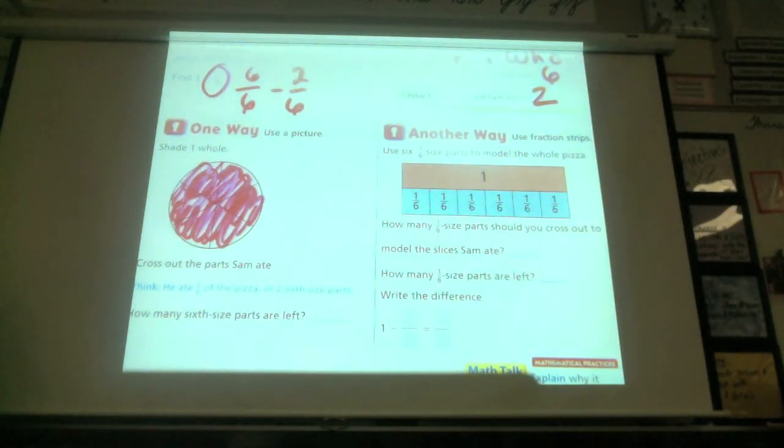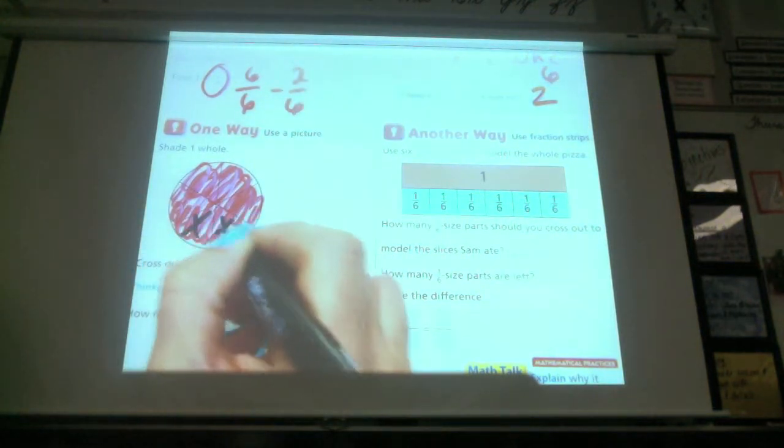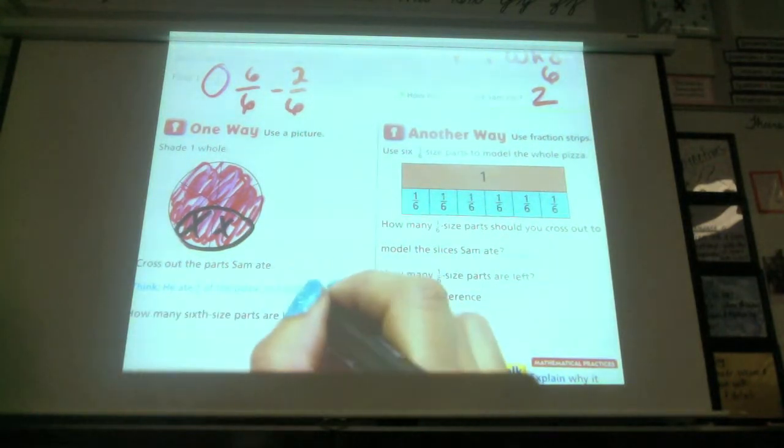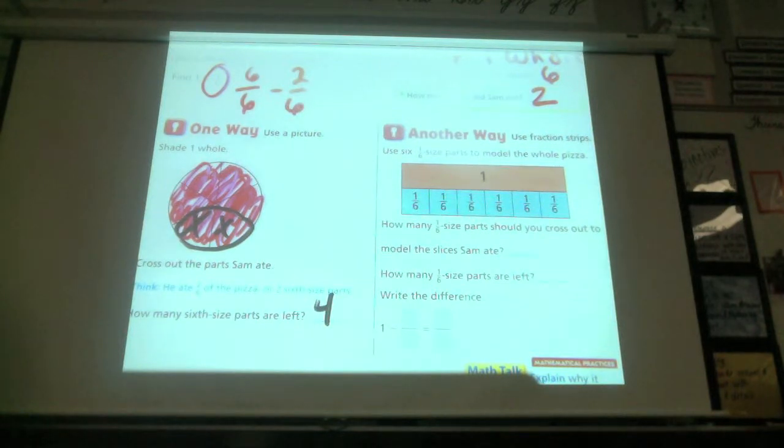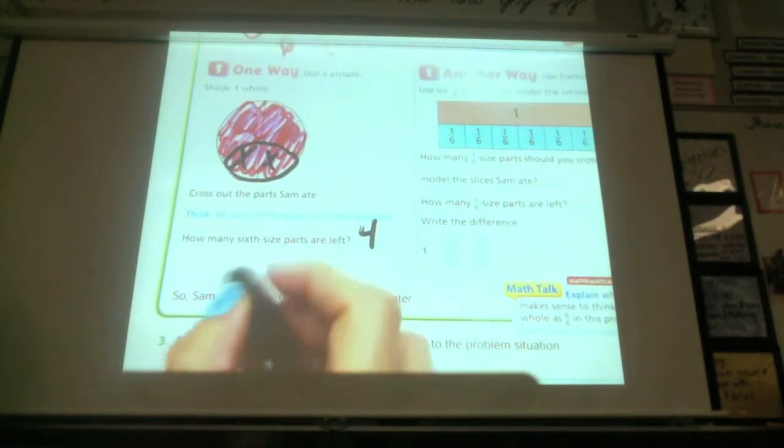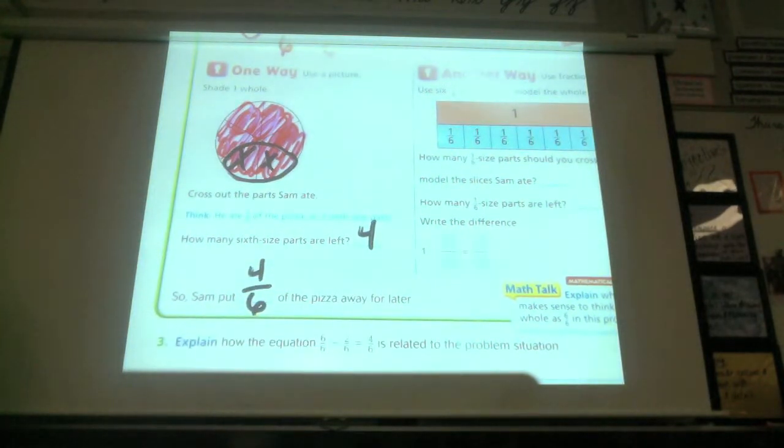He's starting with the whole pizza. Now it says to cross off. You guys don't have to make it solid shade. Now it says cross off how much he ate. How many did he eat? Two. Two. So I'm going to cross off those two. Remember they kind of do like a little circle like this to show the crossing off. How many sixth-size pieces are left, class? Four. Four. So he put, did he put four of the pizza away?